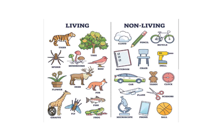First of all, let's start with reviewing what living things are and what non-living things are. Here, on the left side, we have the living things. Living things can be humans, can be animals, and can be plants. Non-living things are things that don't breathe, don't move, don't grow. A tiger is an example of a living thing. A pencil is an example of non-living things.